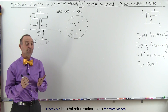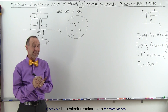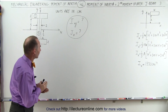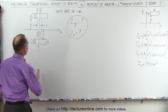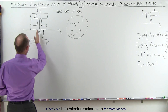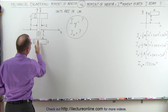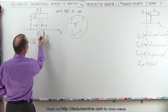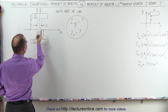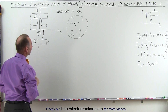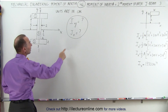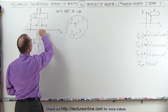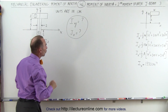Now we're ready to find the moment of inertia of an I-beam relative to the Y-axis. We drew a Y-axis right down the middle of the I-beam in this direction. We're going to find the moment of inertia about the Y-axis and then eventually about the center of mass right there at the origin.